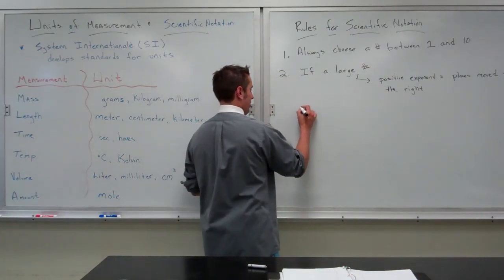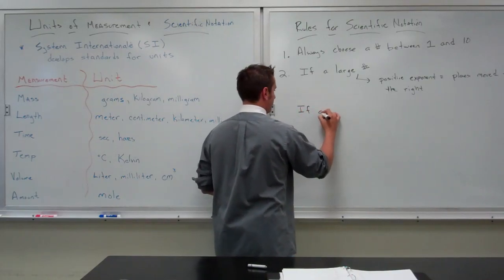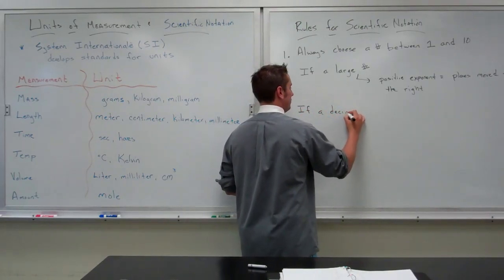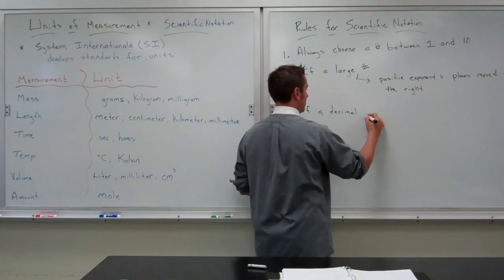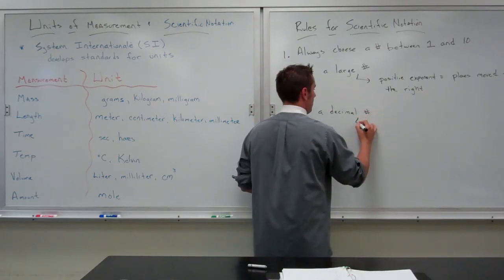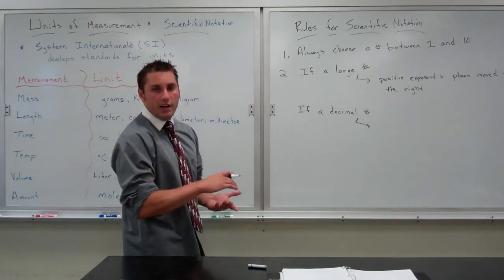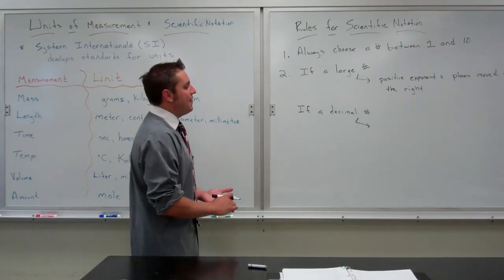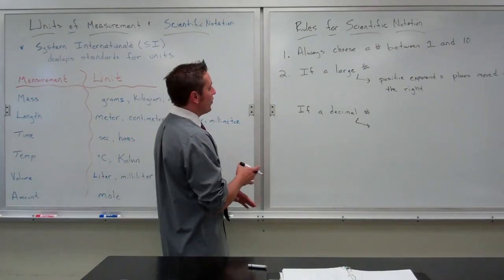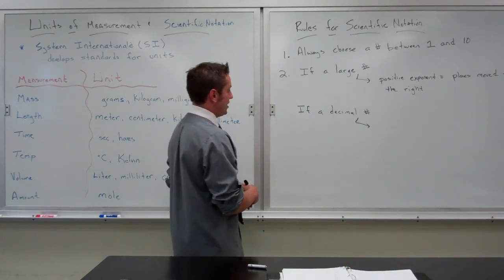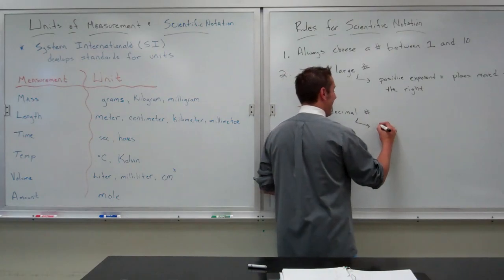If it is a small number, we do the same process, except it's in reverse. We move to get a number between 1 and 10, and then we move as many places to the left to reach the decimal point, leading us to a negative exponent.